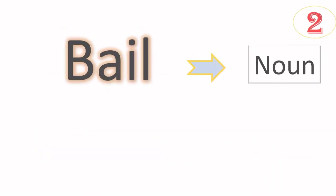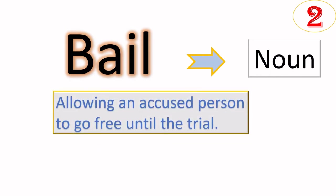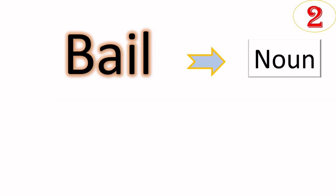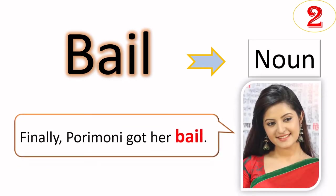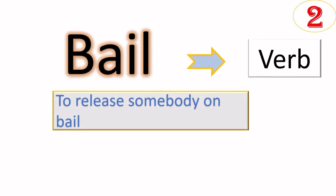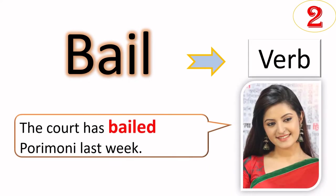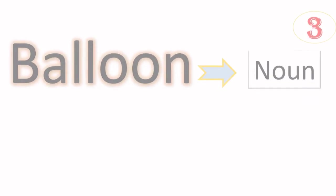Bail as noun means allowing an accused person to go free until the trial. Finally, Rhea Chakraborty got her bail. Here we are using bail as noun. When we use the same word as verb, it means to release somebody on bail. I can give you the same example: the court has bailed Rhea Chakraborty last week.